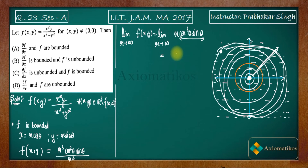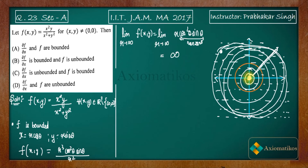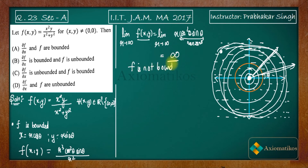Since cos²θ and sinθ are finite numbers, as r→∞ this expression goes to infinity. For any θ where both cosθ and sinθ are nonzero — and we know such θ exists — this term is nonzero. So along that direction f(x,y) diverges, therefore f is not bounded.